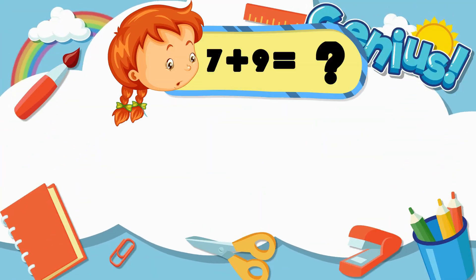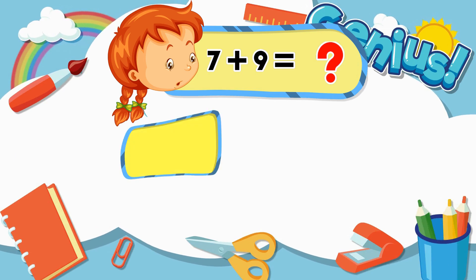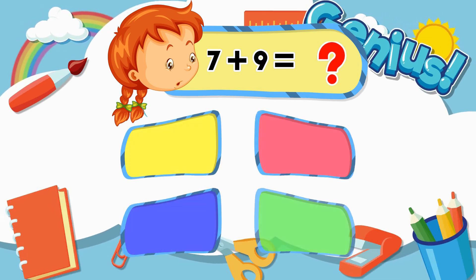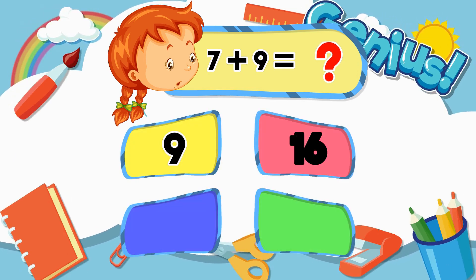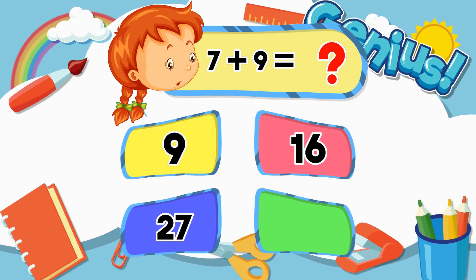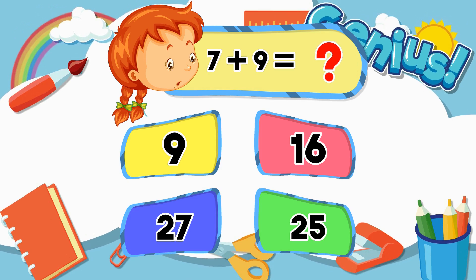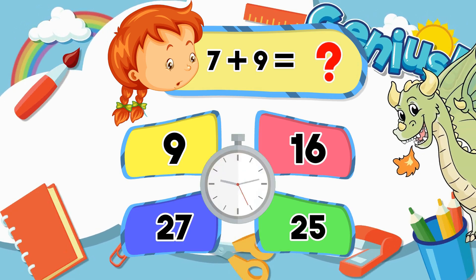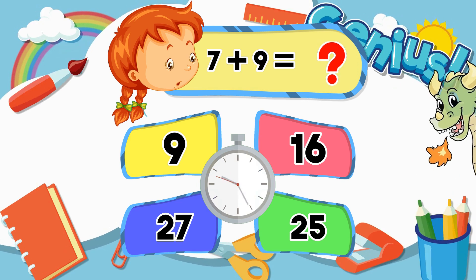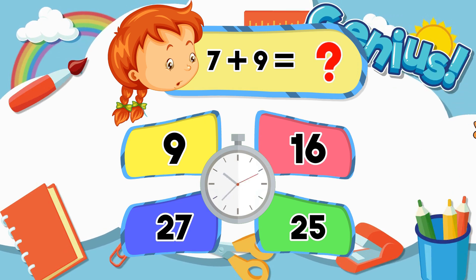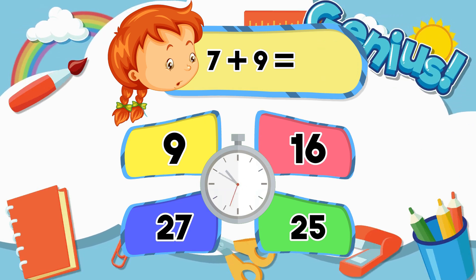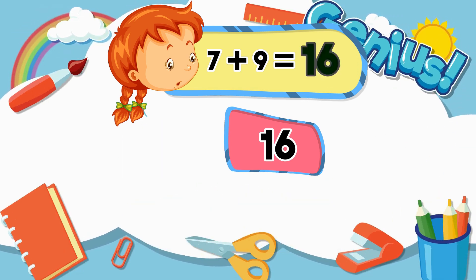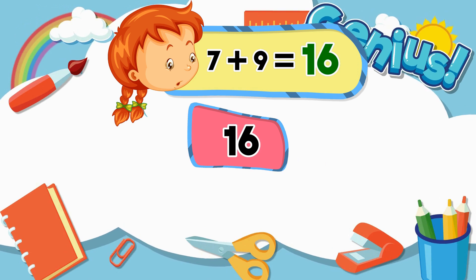What is 7 plus 9? Options: 9, 16, 27, 25. Answer: 16.